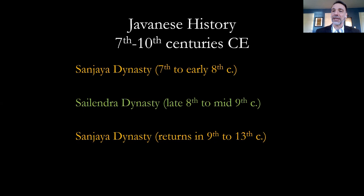Javanese history between the 7th and 10th centuries CE: the older theory said there was one dynasty or royal family known as the Sanjaya, who were predominantly Hindu, ruling the region until the 8th century. After that they were replaced by the Shailendra dynasty, which was predominantly Buddhist, ruling through the mid-9th century — the period in which Borobudur was built. Afterwards, the Sanjaya returned, overthrew the Shailendra, and took over the region again until the 13th century.